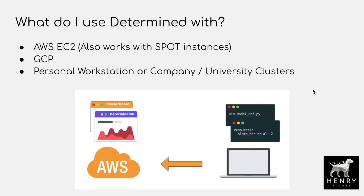Determined AI can run on AWS EC2 and works with spot instances — a cheaper way of using EC2 instances where you might get timed out, similar to Google Colab's lower-cost resources. You can also use it with the Google Cloud Compute Platform, a personal workstation, or a cluster running on Kubernetes. You write the model definition and configuration locally, then send it to the cloud computing service through the Determined AI interface to run the experiments.